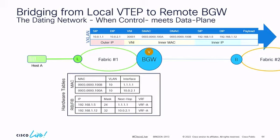Question on outer MAC: in the underlay there is classic routing happening, so outer MACs are rewritten hop-by-hop — leaf to spine to border gateway. But from a VXLAN tunnel perspective, what matters are the source IP and destination IP of the outer header — the VTEP IP addresses. The outer MACs are changed in both bridging and routing because VXLAN is an IP tunnel over the top, but the SIPs and DIPs of the outer header are the most important pieces to follow.